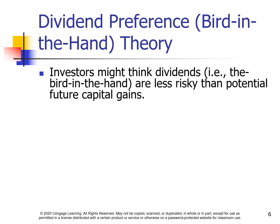Dividend preference theory, or bird in the hand theory: investors might think dividends are less risky than potential future capital gains.